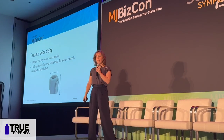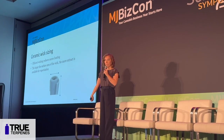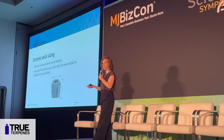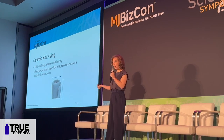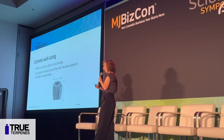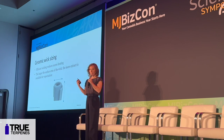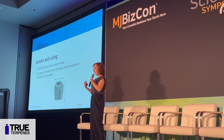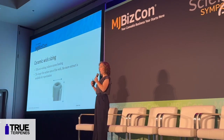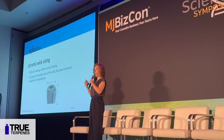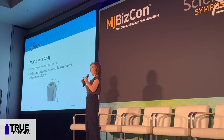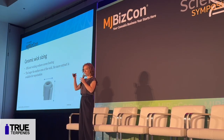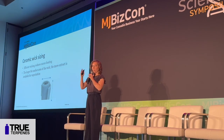The next parameter to look at is the ceramic wick sizing. Once you take the cart apart, it's two measurements and some math — the height and the diameter of the ceramic. You don't want the volume; you want the ceramic surface area, because the ceramic surface area tells you how much extract is available to be aerosolized, since it's going to be heated at the surface of the ceramic.